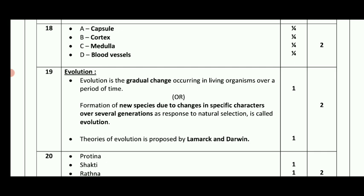The gradual change of specific characters over several generations as a response to natural selection is called evolution. The theories of evolution were proposed by Lamarck and Darwin. So in this point, you have two marks.